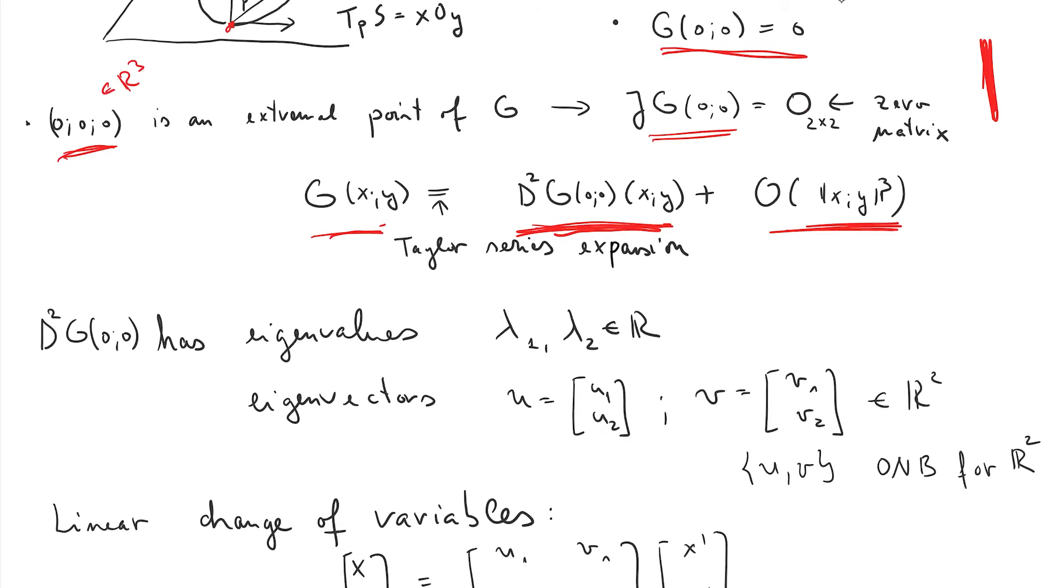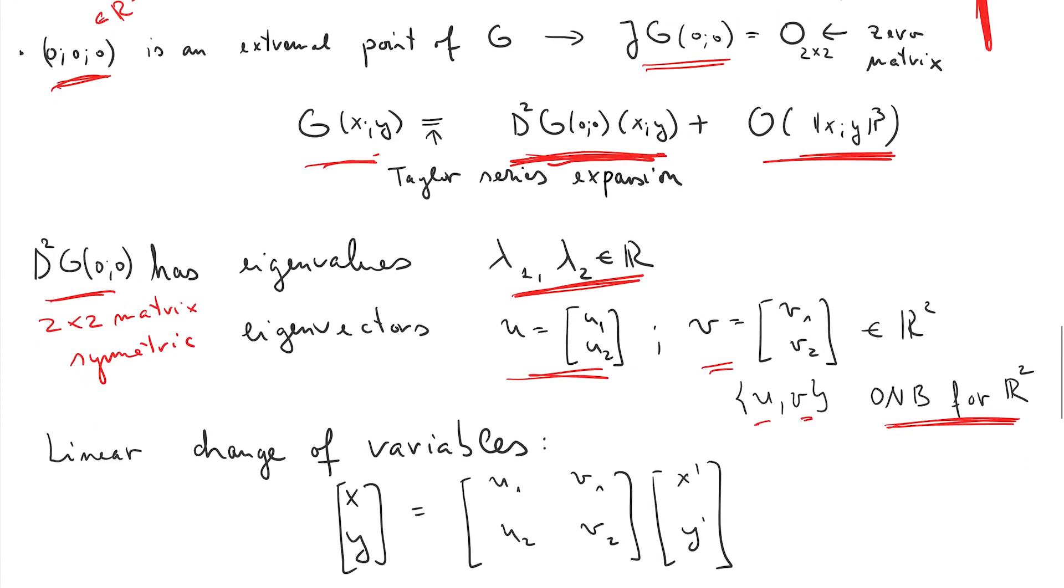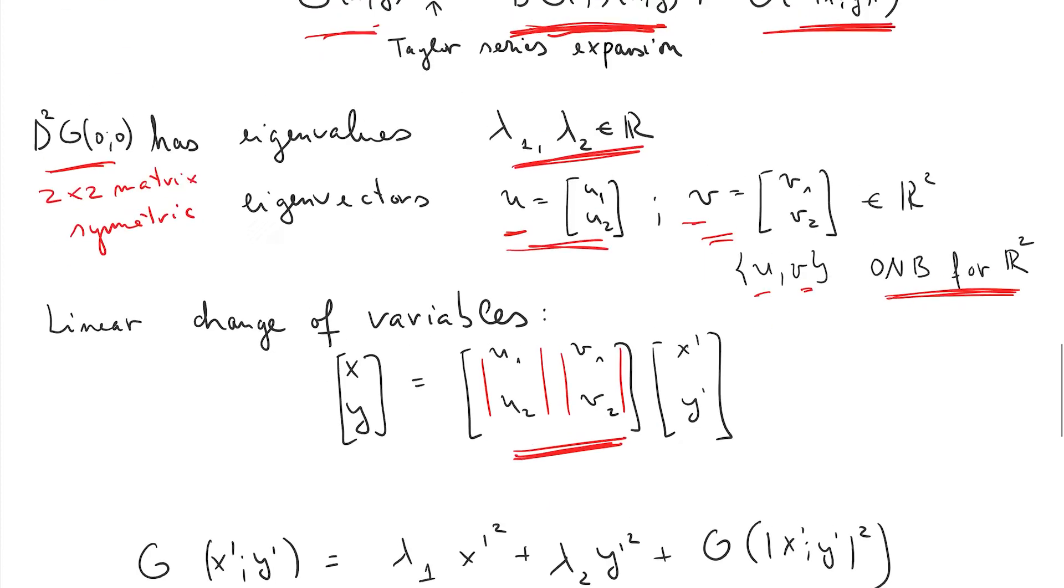So the Hessian, what do we know about them? This is a two by two matrix that's symmetric. A bit of linear algebra wisdom tells you that if you're a two by two real valued symmetric matrix, then you have real eigenvalues. And to such real eigenvalues, you can associate eigenvectors, call them U and V, where the eigenvalues are lambda one, lambda two. And moreover, you can pick U and V so that it forms an orthonormal basis in R two. Whenever you have an orthonormal basis, you're always very tempted to make a change of variables. So that's what I'm doing here, where the columns here are coming from U and V. So X and Y will become X prime, Y prime.